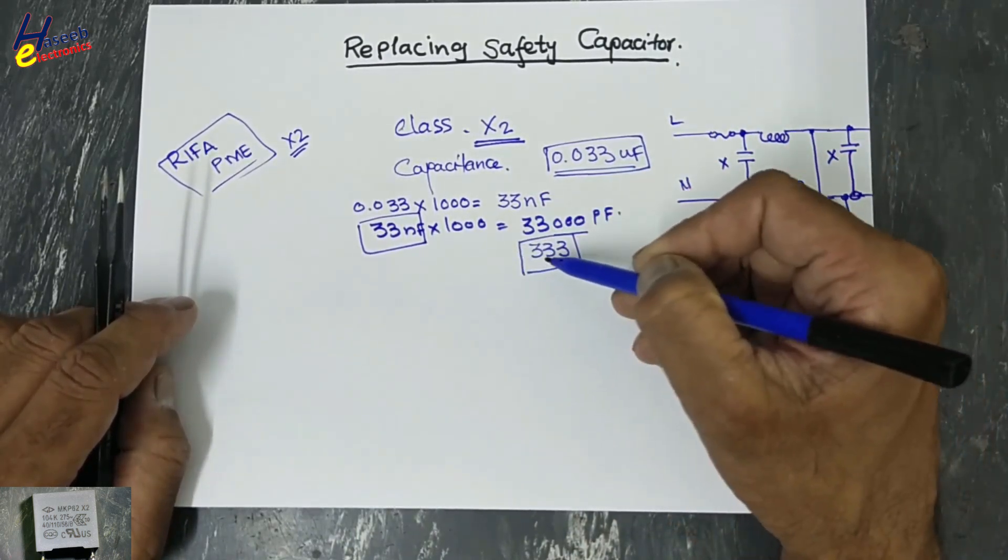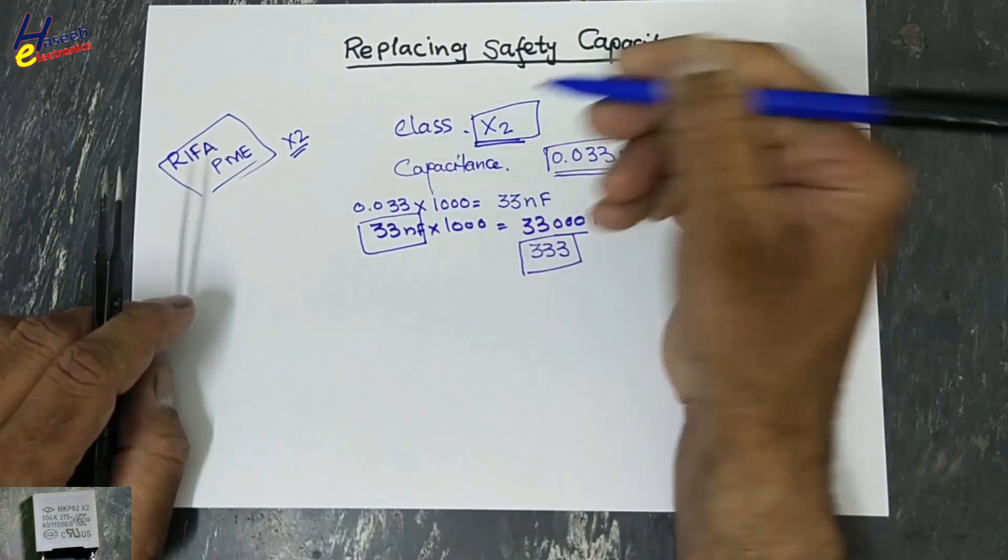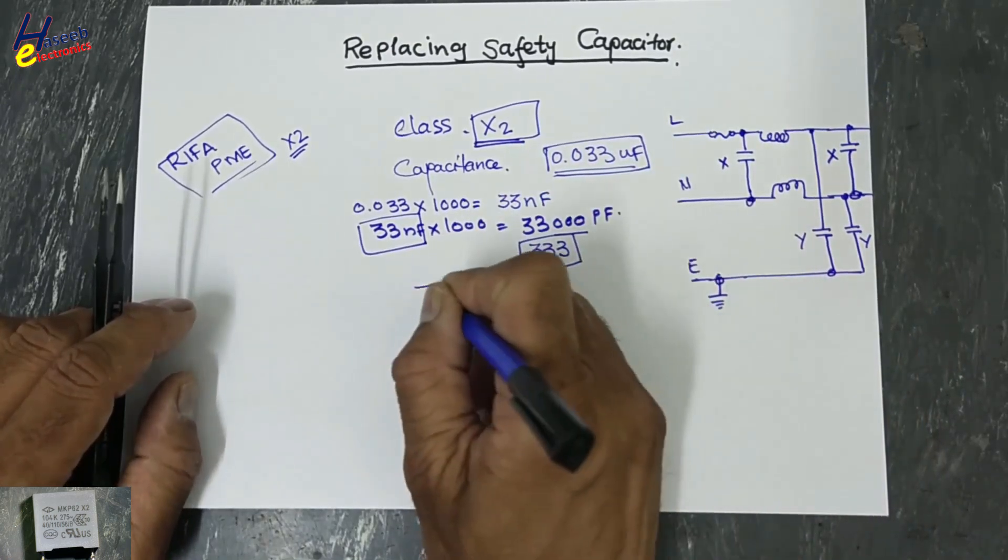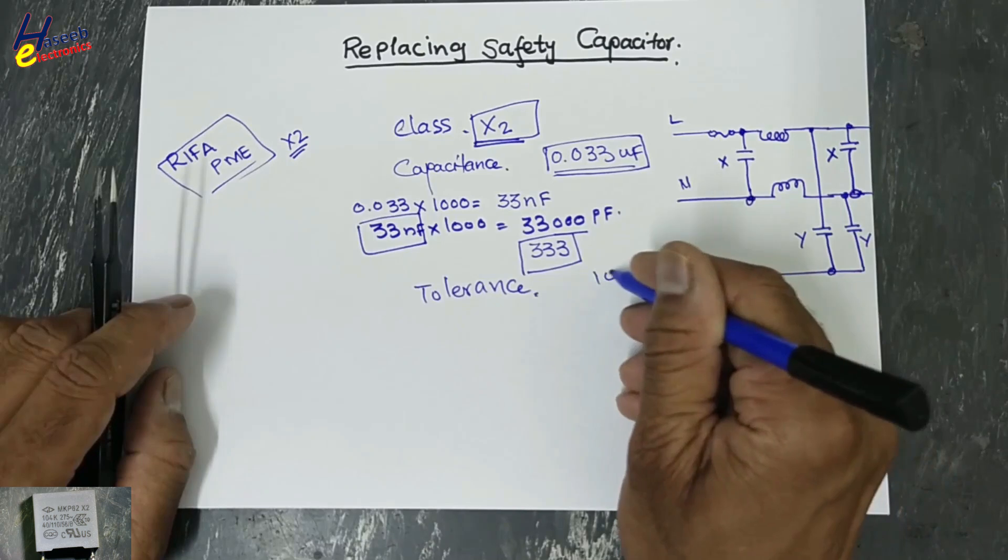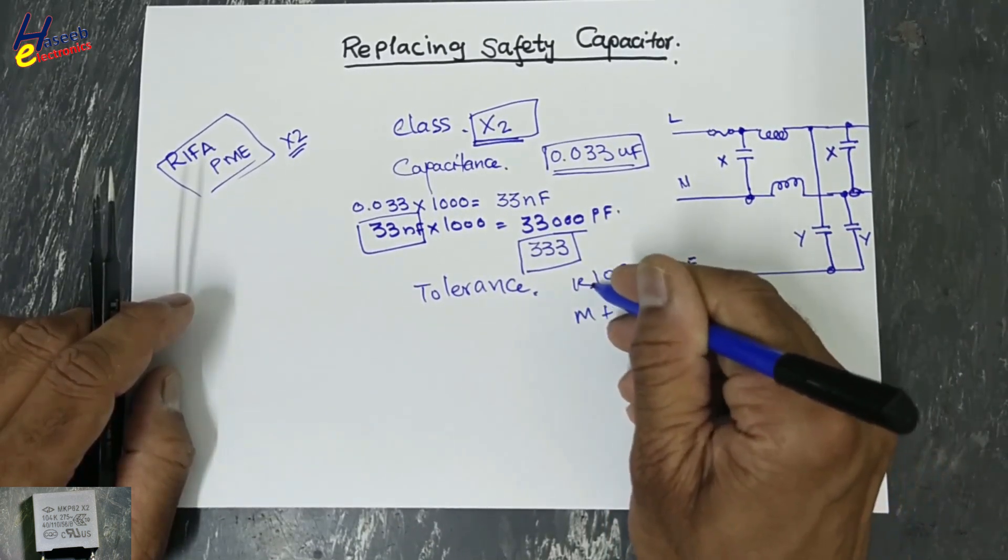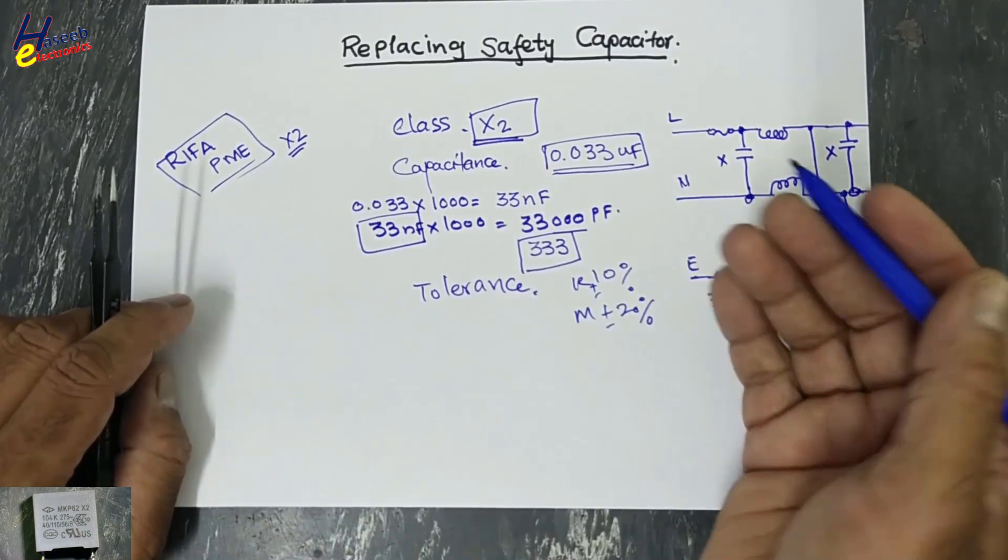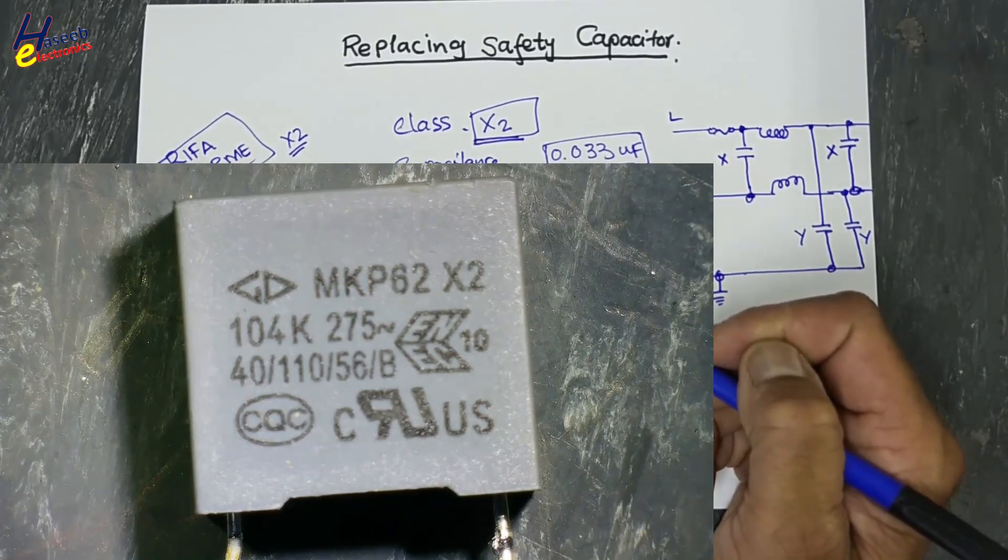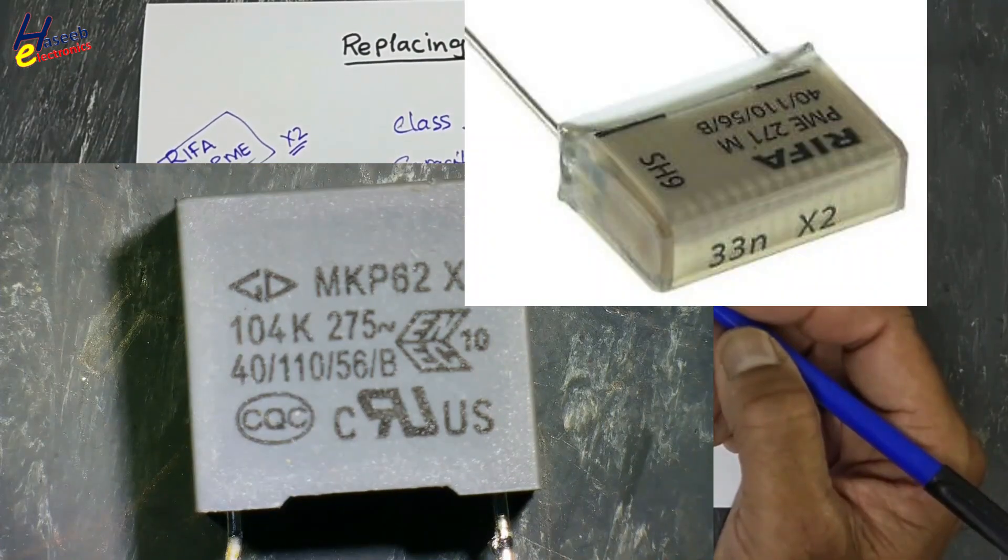First point: classification. Second point: capacitance. Third point: tolerance. K means 10%, M means plus minus 20%. If the original capacitor is 10%, we will select K, as here 104K.